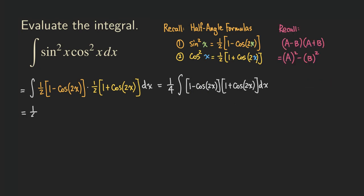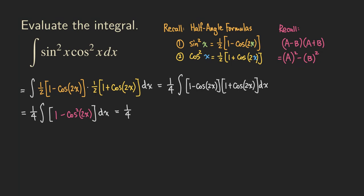Continuing, we still have one-fourth outside the integral, and inside we get 1 minus cosine squared of 2x. But by the Pythagorean identity, 1 minus cosine squared equals sine squared, so this becomes one-fourth times the integral of sine squared of 2x dx.